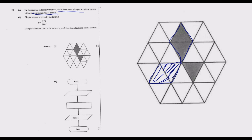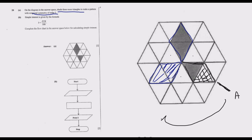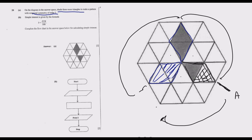Once you shade these triangles, what you discover is these three shapes look alike, and the distance between them is equal — one triangle gap between each. Starting from side A, we rotate it one time so this side comes here, then the second rotation, then the third brings us back to where we were. These are the parts we shade to ensure this has rotational symmetry of order 3, centered at the center point.